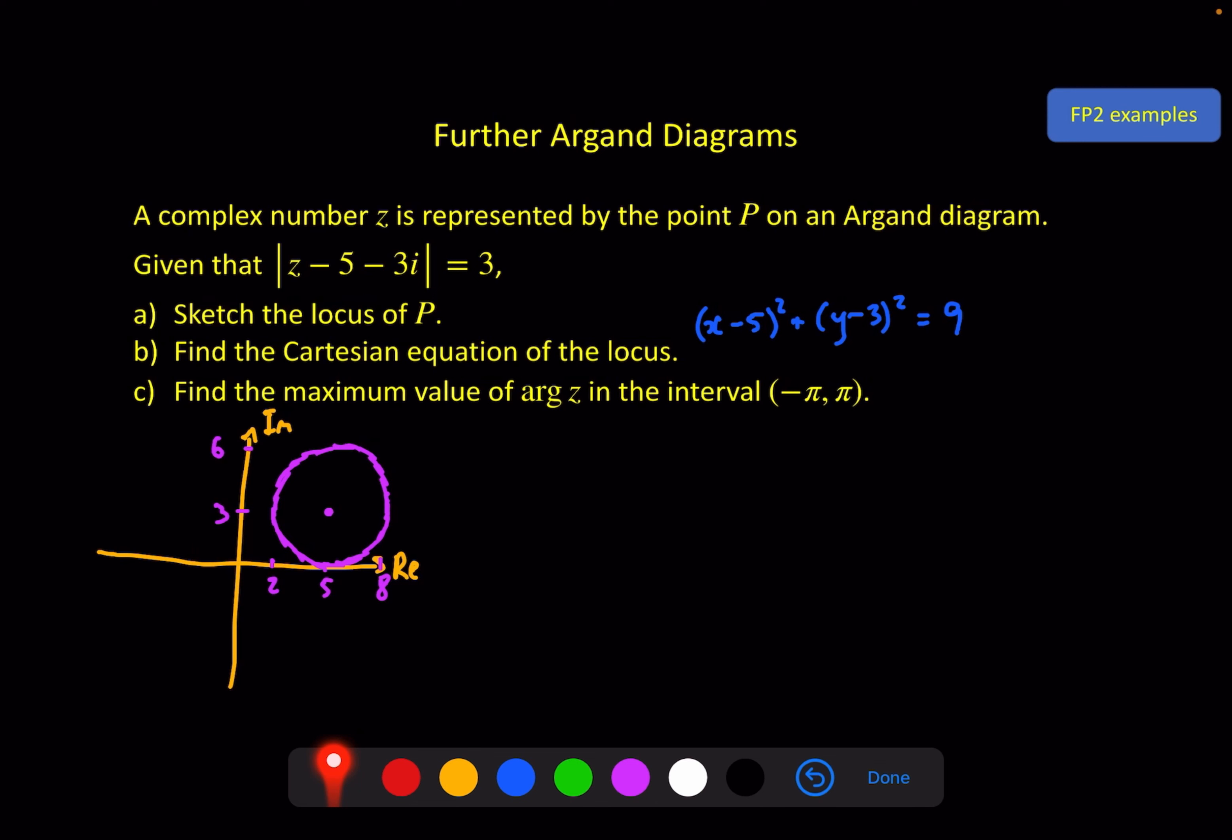Part c again here is the problem solving question. Find the maximum value of arg z in the interval -π to π. So all of the different possible z values are here in the locus. We want the one with the maximum argument of z, i.e. the biggest angle measured from the positive real axis. Well, we can see straight away that there's nothing below the real axis, so this -π is pretty much redundant. It could have said zero to π, because we're going to be above the real axis. If I take this point, for example, it has a fairly small angle. If I take this point, it has a bigger angle.